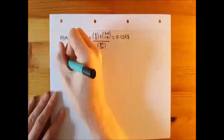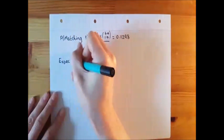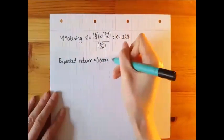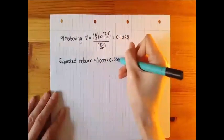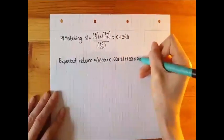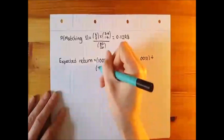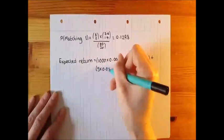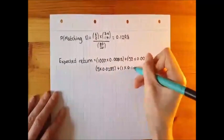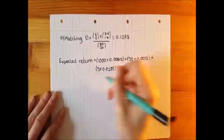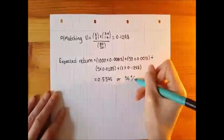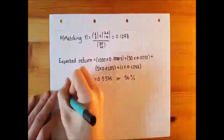To work out the expected returns, I will assume the returns are what were shown in the first Keno video. These give an expected return of 0.5573, or 56%, during the calculation shown in the video. The casino edge is therefore a massive 43% for this number of spots.